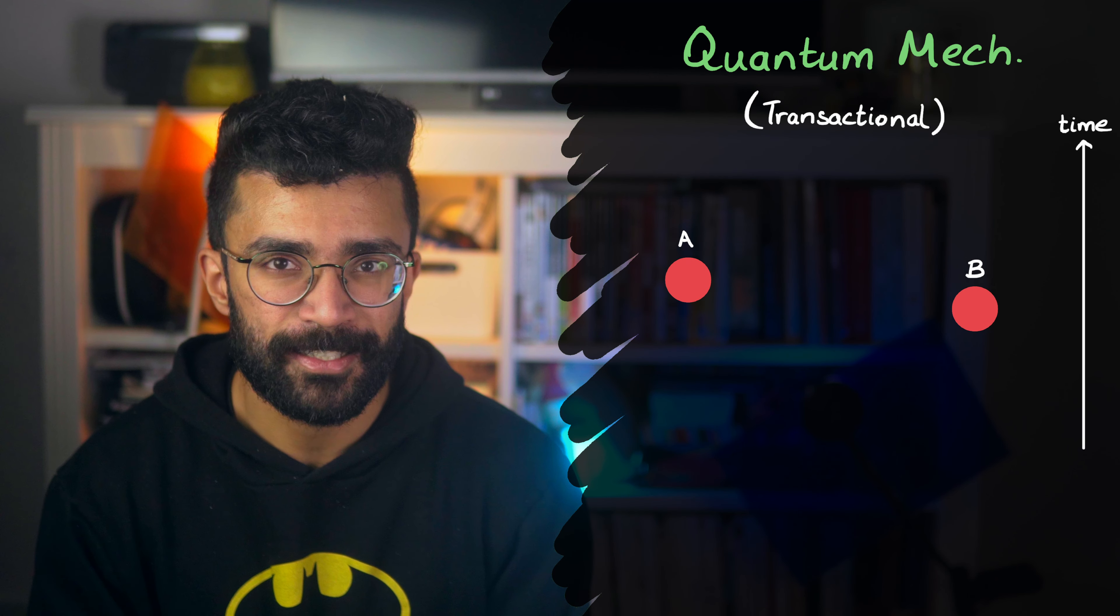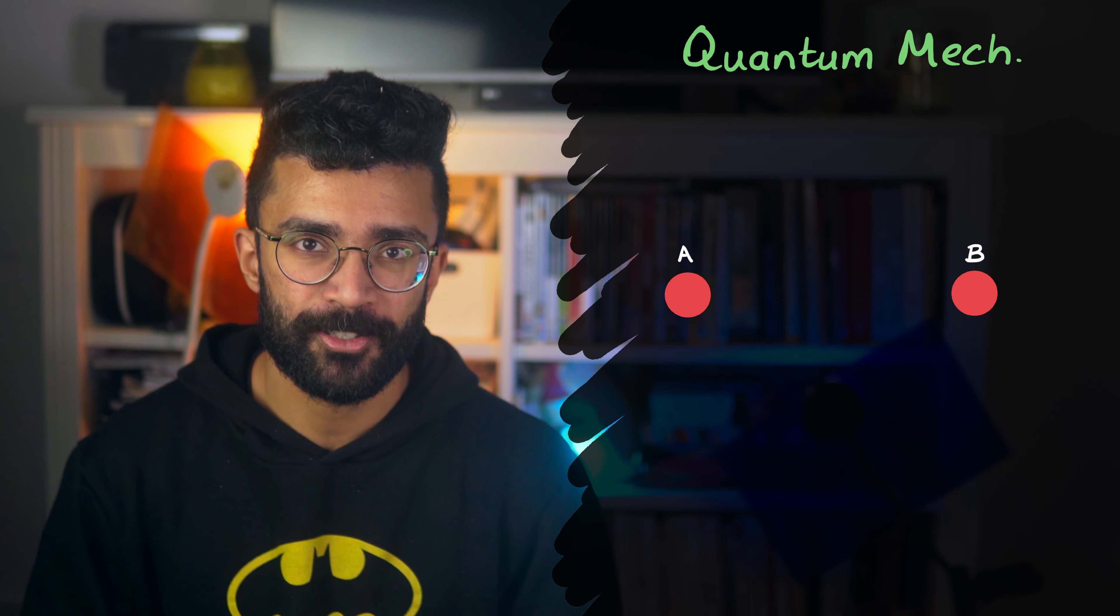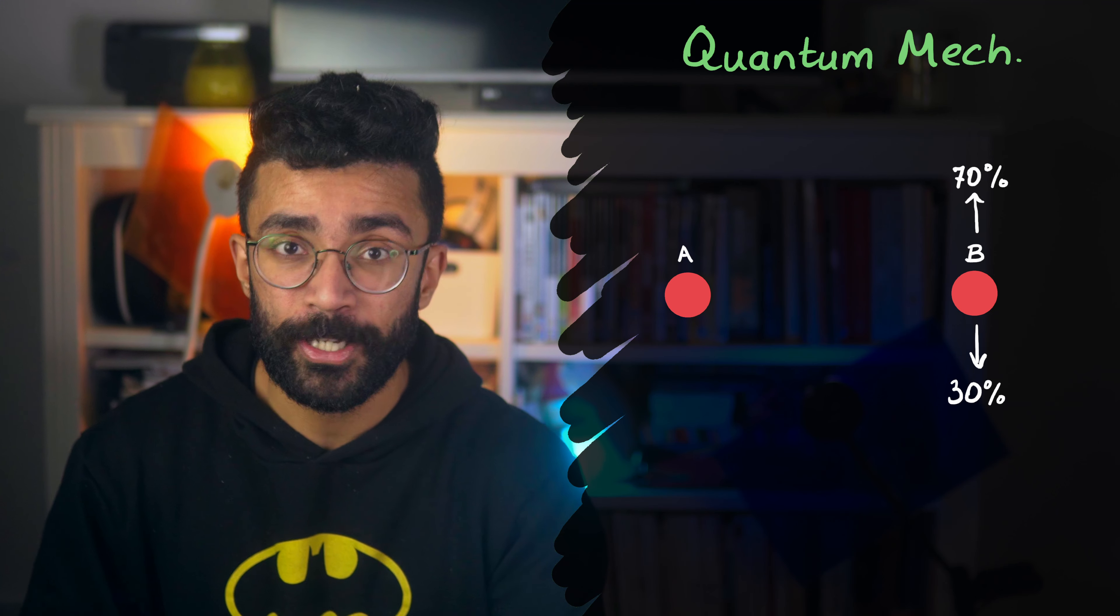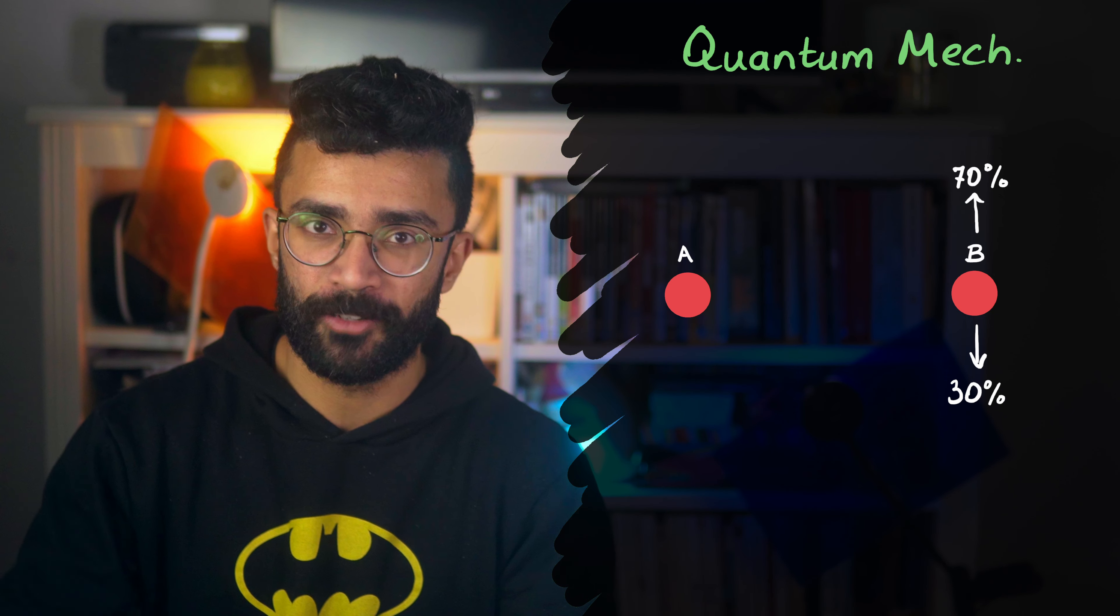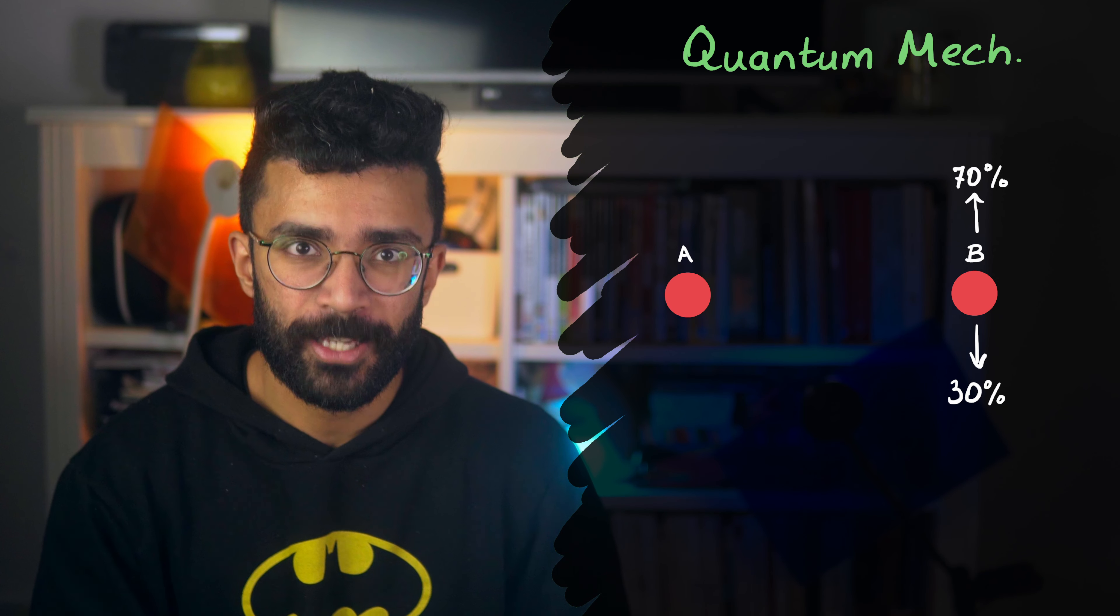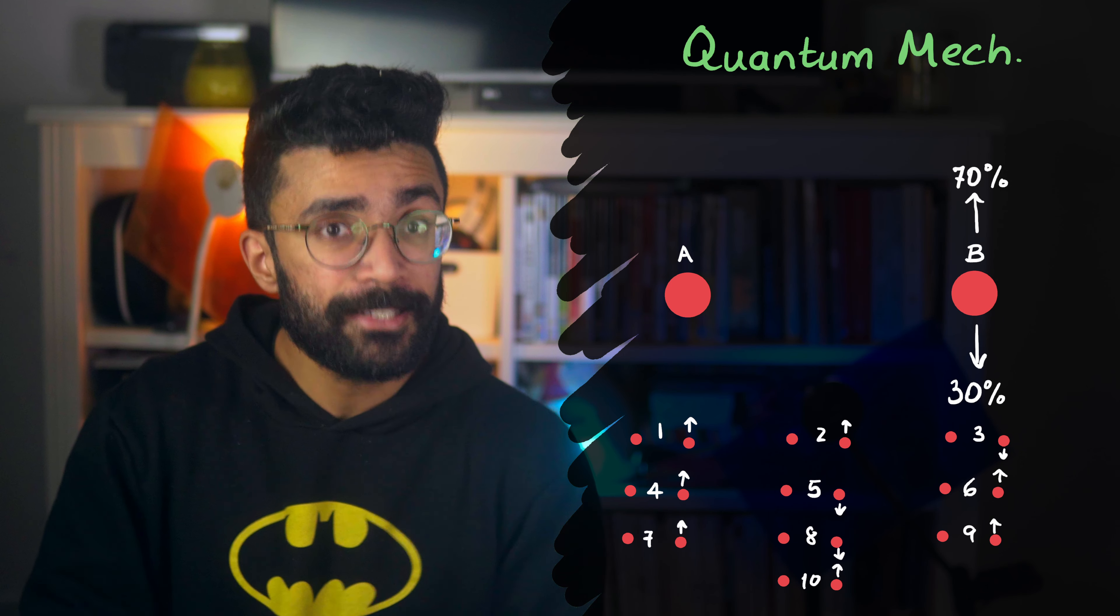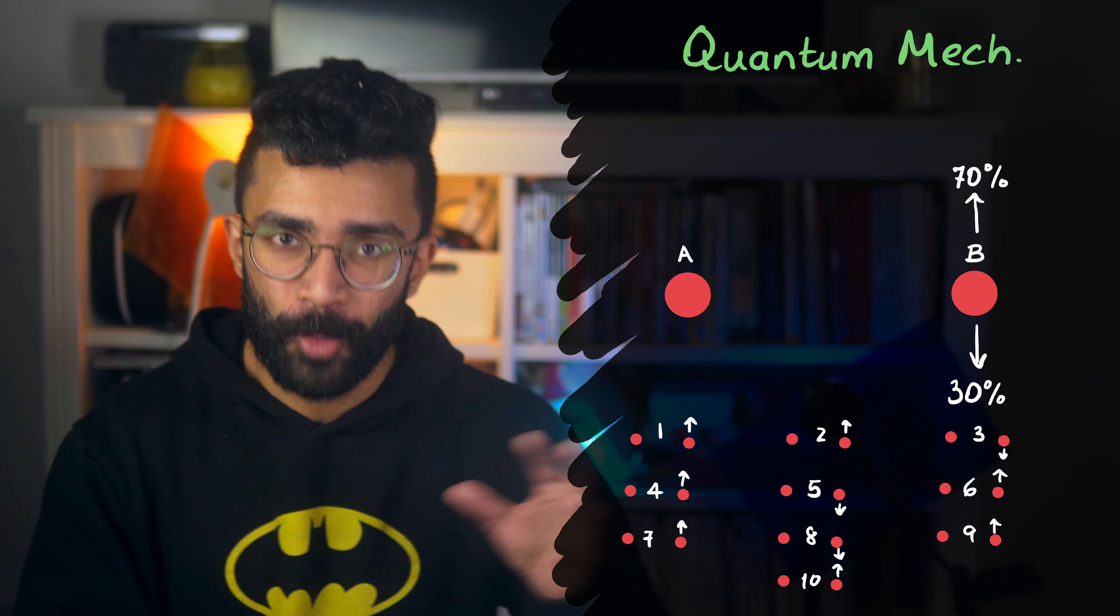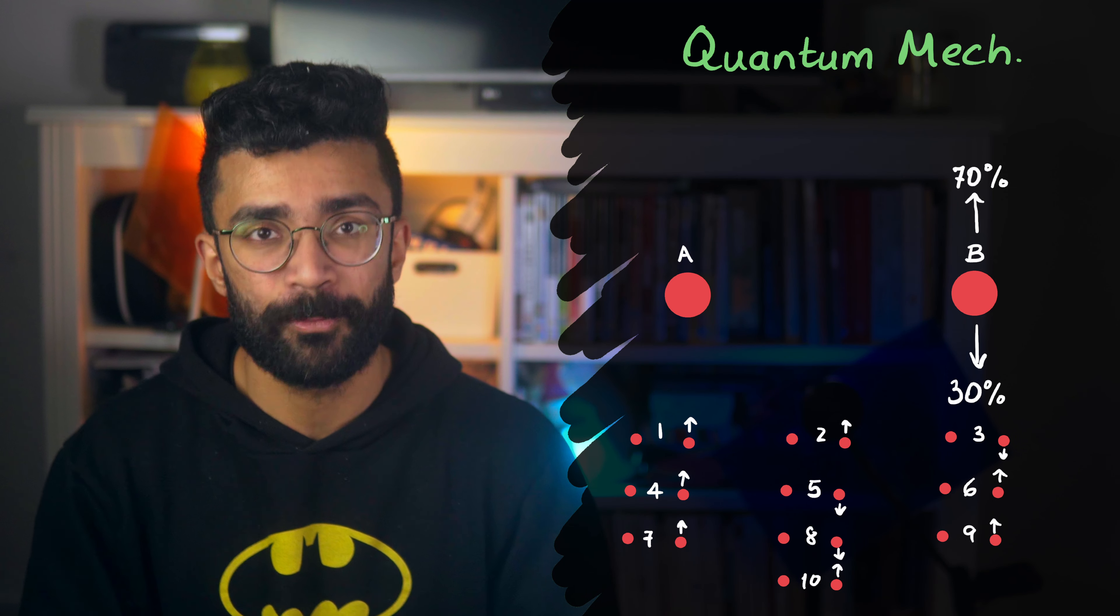We've also seen that quantum mechanics is inherently a probabilistic theory. The theory only tells us the different possible results we could measure if we were to do an experiment, and the likelihood of each one. It won't tell us exactly what will happen in an experiment. Put another way, if we do the same experiment over and over, each time we might get different results. And the weighting of the results will be in line with the theoretical predictions of quantum mechanics.